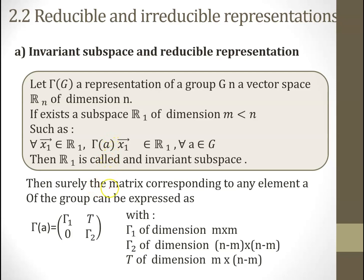If we have an invariant subspace, the representation of any element a of the group can be expressed in block form: gamma_1, T, 0, gamma_2 — where gamma_1 is of dimension m by m (in the subspace R1), gamma_2 is of dimension (n−m) by (n−m) (the complementary subspace), and here we have a zero matrix, while this upper-right block T can be non-zero, of dimension m by (n−m).